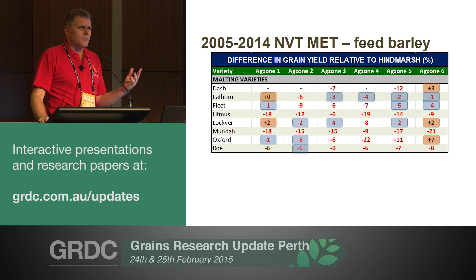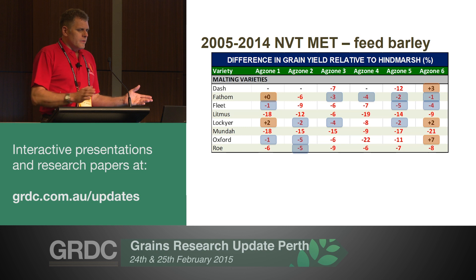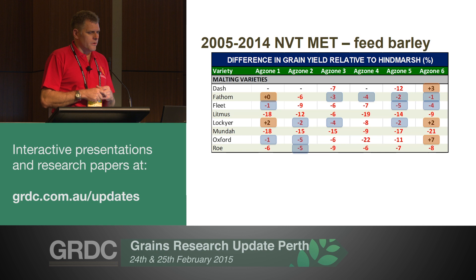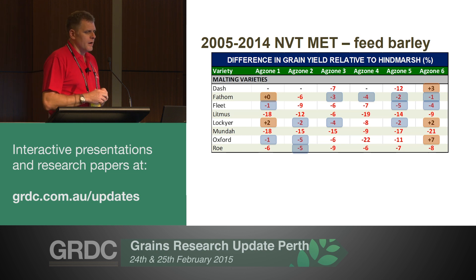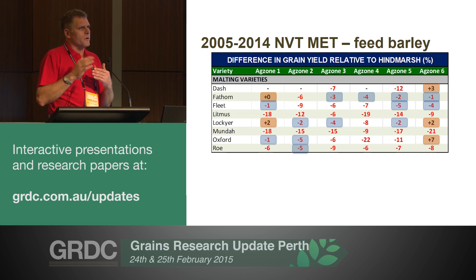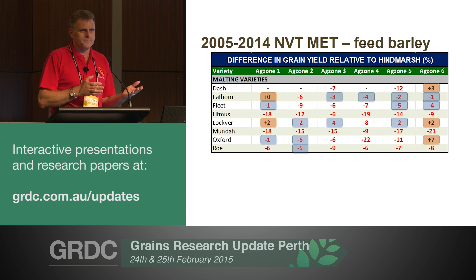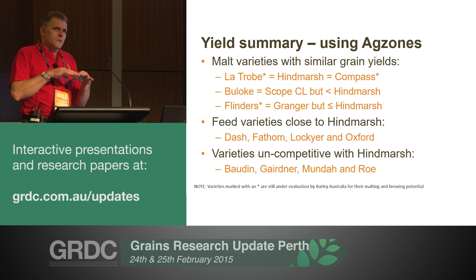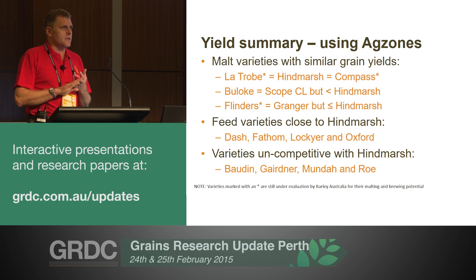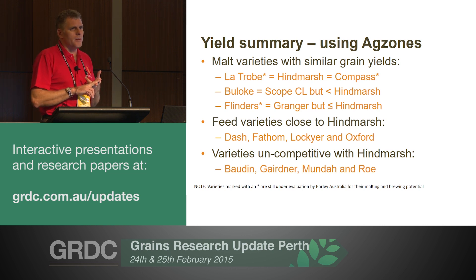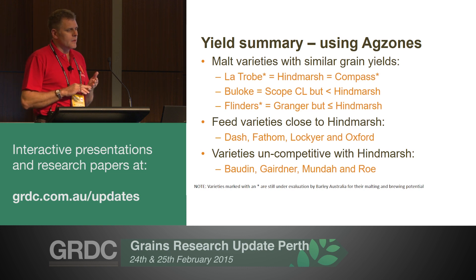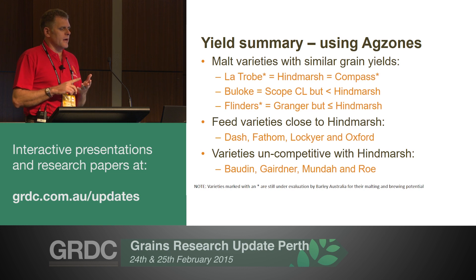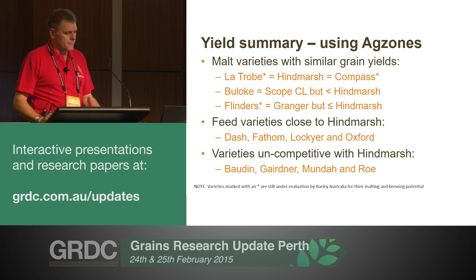Looking at feed varieties in the same table, the feed varieties within 95–100% of Hindmarsh are Fathom, Lockyer at a couple of sites, and Oxford at a couple of sites. There are only a couple of locations — particularly Ag Zone 6 and Ag Zone 1 — where trials indicate feed varieties that will out-yield Hindmarsh. The meta-analysis on ag zones suggests Latrobe, Hindmarsh, and Compass have the same yield. Bodan, Garda, Mundan, and Roe have generally been uncompetitive with Hindmarsh in NVT.